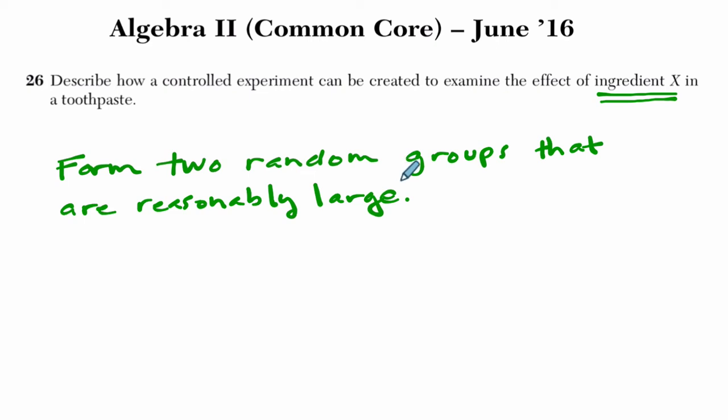Now it turns out, if you look at the way they graded this question, they did accept answers where you had two groups of ten, or I think even five people, but I would say a reasonably large amount of people. And you want to form two random groups that are reasonably large. And that's maybe not the best grammar here, I'll start the second sentence with the word 'and.'